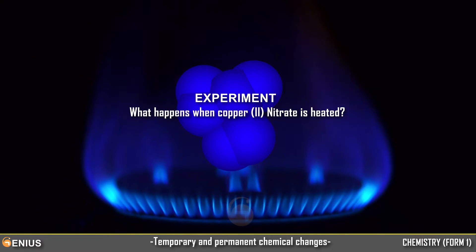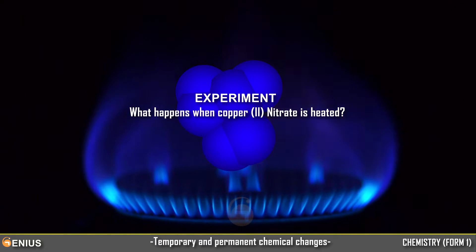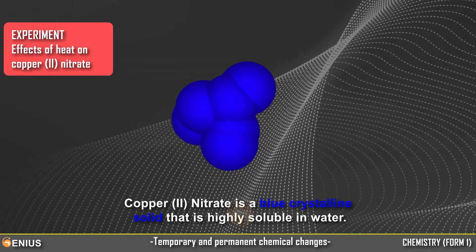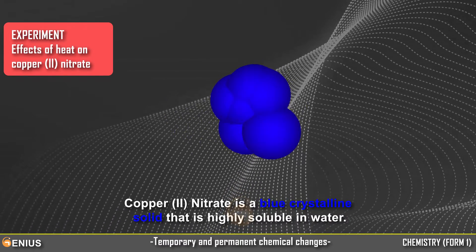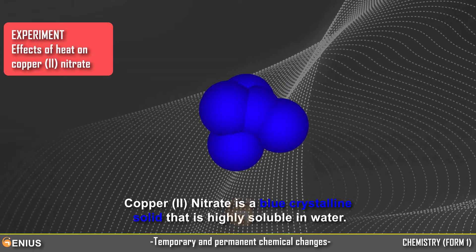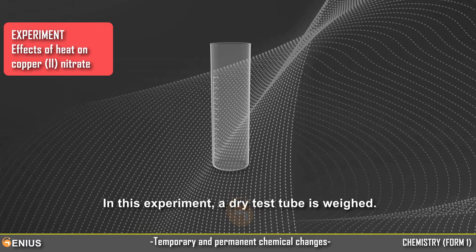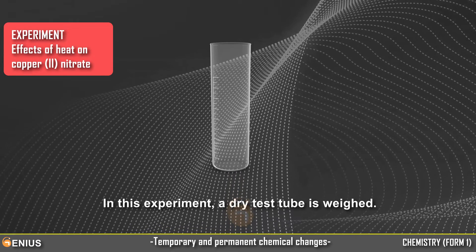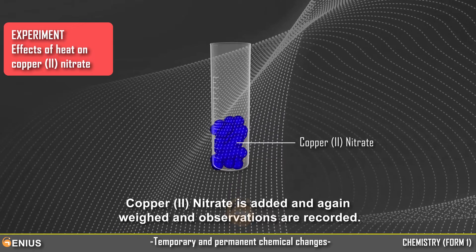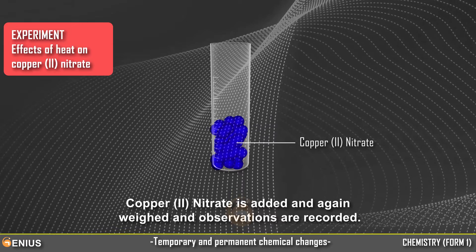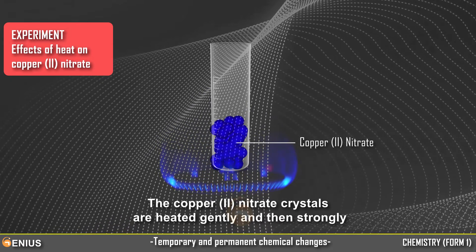Experiment: What happens when copper-2-nitrate is heated? Let us observe this experiment on the effects of heat on copper-2-nitrate. Copper-2-nitrate is a blue crystalline solid that is highly soluble in water. In this experiment, a dry test tube is weighed, copper-2-nitrate is added and again weighed, and observations are recorded. The copper-2-nitrate crystals are then heated gently and then strongly.